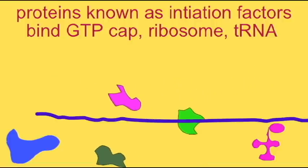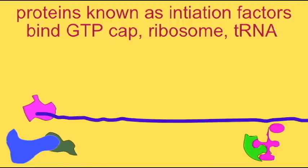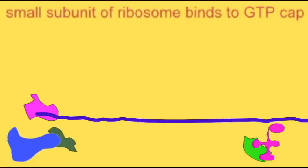A number of proteins known as initiation factors are required to begin translation. They bind to the GTP cap of the mRNA, to the small subunit of the ribosome, and to the first tRNA.